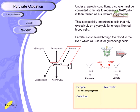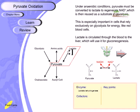This is especially important in cells that rely exclusively on glycolysis for energy, like red blood cells, which cannot carry on the Krebs cycle because the Krebs cycle needs a lot of complex machinery and enzymes. Those cells are destined to deliver oxygen, so they depend only on glycolysis. In those cells this step is really important. Lactate is circulated through the blood to the liver, where it is used in glycolysis.